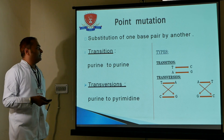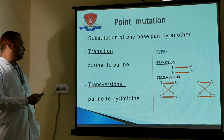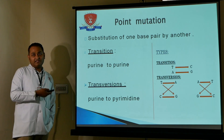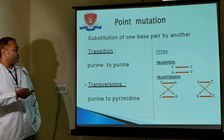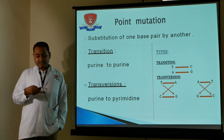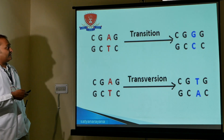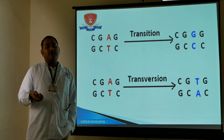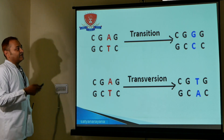Point mutation involves substitution of one base pair by another — transition or transversion. If a purine is replaced by a purine, or a pyrimidine by a pyrimidine, that is a transition. If a purine is replaced by a pyrimidine, or vice versa, that is a transversion. A and G are purines; thymine, cytosine, and uracil are pyrimidines.